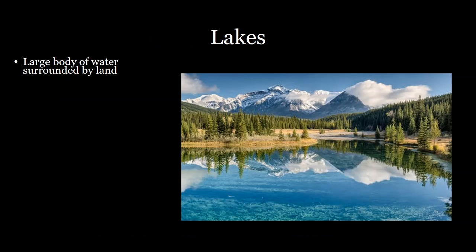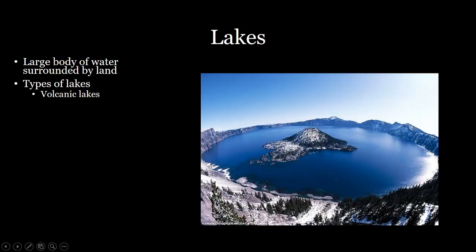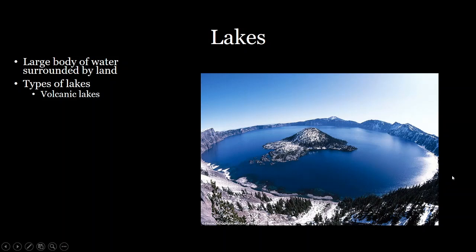Next we'll talk about lakes. Lakes are just a large water body surrounded by land. There are a lot of different types of lakes — this is Crater Lake in Oregon, formed at the top of a volcano that blew its top a few thousand years ago. If you ever have a chance to go to Crater Lake, it's absolutely gorgeous. The water here is actually several thousand feet deep and as a result it has this beautiful blue color.